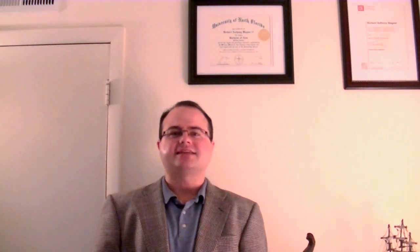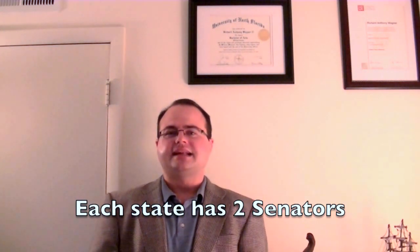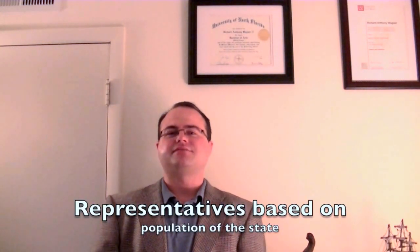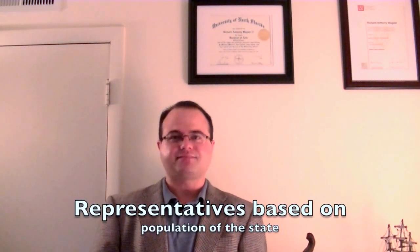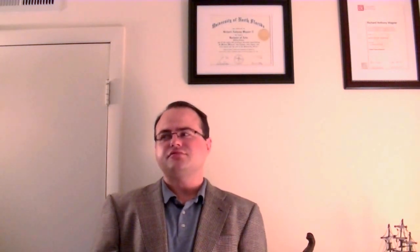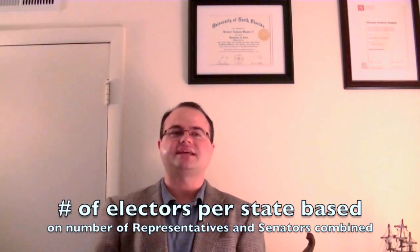Every state has two senators and also has a certain number of representatives. Regardless of population size, every state has its two senators, but the number of representatives in the House is based on population size, so that's the population part of it. Getting over to the electoral college, Congress has no direct say over the electoral college.